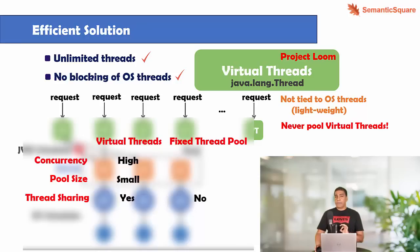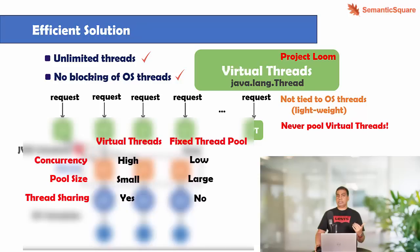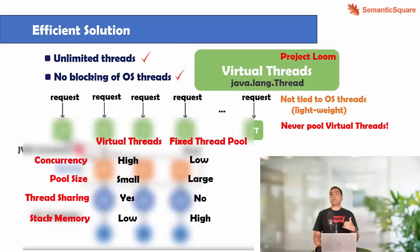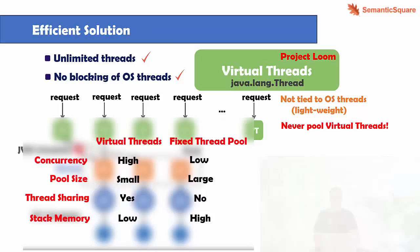With a fixed thread pool, we would be creating a large number of platform threads — like 100 or 200 — but we can only handle that many concurrent requests. With virtual threads, since we can create an unlimited number, we can handle an equal number of concurrent tasks, so concurrency is increased dramatically. Another issue with fixed thread pools is they use a lot of stack memory — if you create 500 platform threads, each requires a stack of something like one megabyte, so you're using a lot of stack memory. Here we use fewer platform threads, generally equal to the number of CPU cores, though that number can also be adjusted using a VM flag.